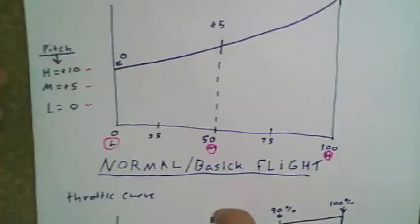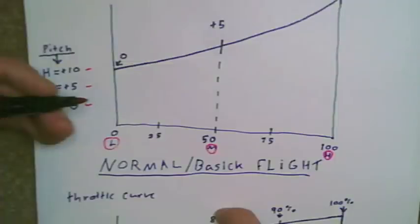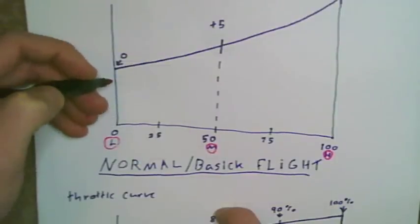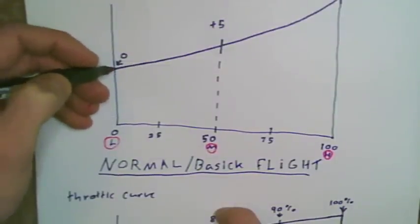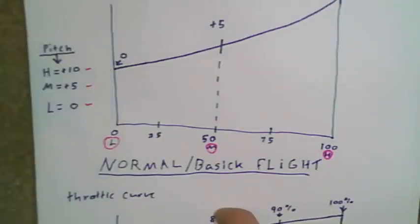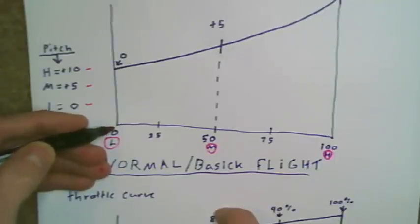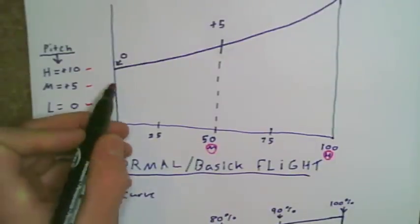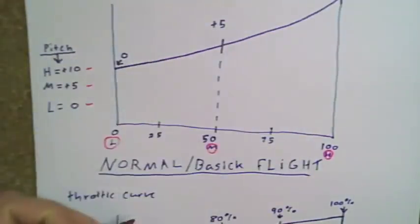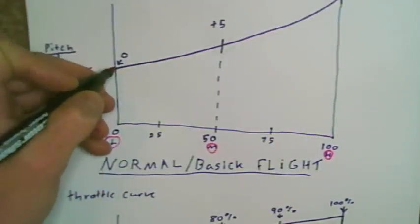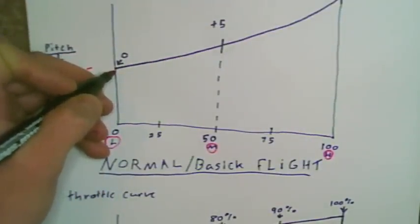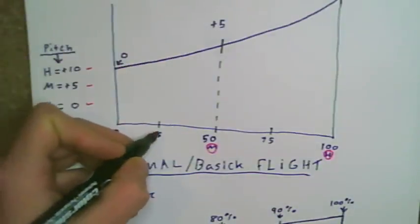When you're in the process of programming the helicopter, you program it at mid stick to have zero. In your normal pitch curve you're going to want to adjust the curve so you have zero at mid stick, because if you set it up for a plus or minus eleven for your 3D modes, you'll obviously have that value here and you don't want that in normal mode. We want to go zero, plus five, plus ten.